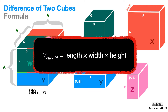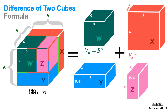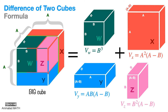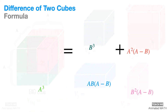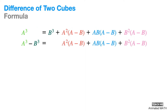Next, we find the volumes of these boxes. If you add the volumes of W, X, Y, and Z, then you'll get the volume of the big cube, which is A cubed. Now, let's use all of these volume equations and move B cubed to the left side of the equation.